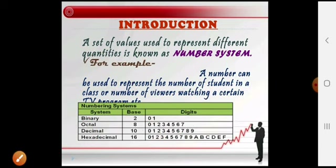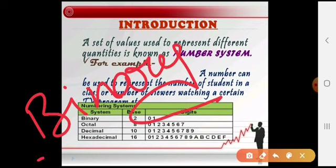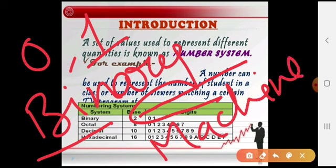When we have any data — any picture, any video, any audio, or any text on the computer — it is always converted into binary form, yani 0 and 1. Because the computer can understand only the binary form — the machine language — and in machine language there is binary form. Binary form means 0 and 1: 0 represents off state, and 1 represents on state.